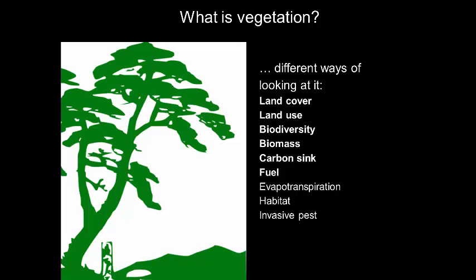For example, vegetation can be looked at like a land cover or land use, can mean biodiversity, biomass, carbon sink, or fuel if you are talking to a bushfire researcher. But whatever the definition, as vegetation is the dominant component in most ecosystems, we can use remote sensing to routinely gather information for characterizing and managing these organic systems.